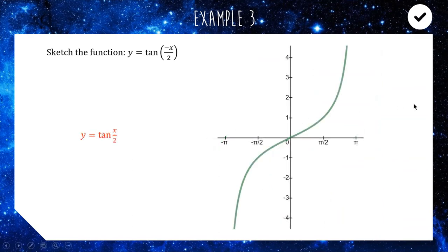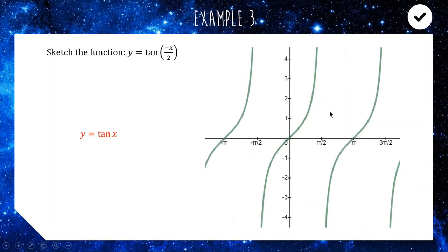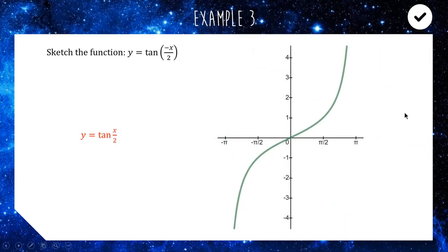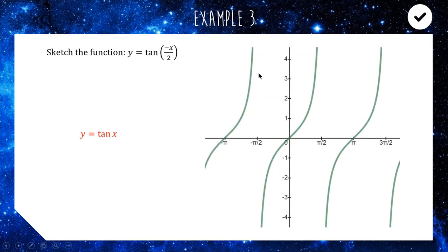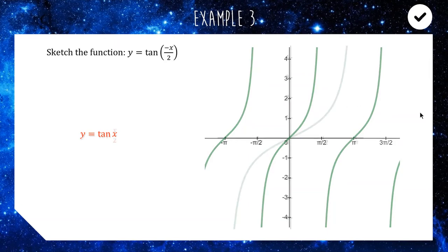Now for tan(x/2): we're changing the period. If we did tan(2x) it would contract — repeating twice as often. Because we're dividing by 2 here, it pushes out by a factor of 2, making it twice as wide. The asymptotes that were at −π/2 and π/2 are now pushed out to −π and π.